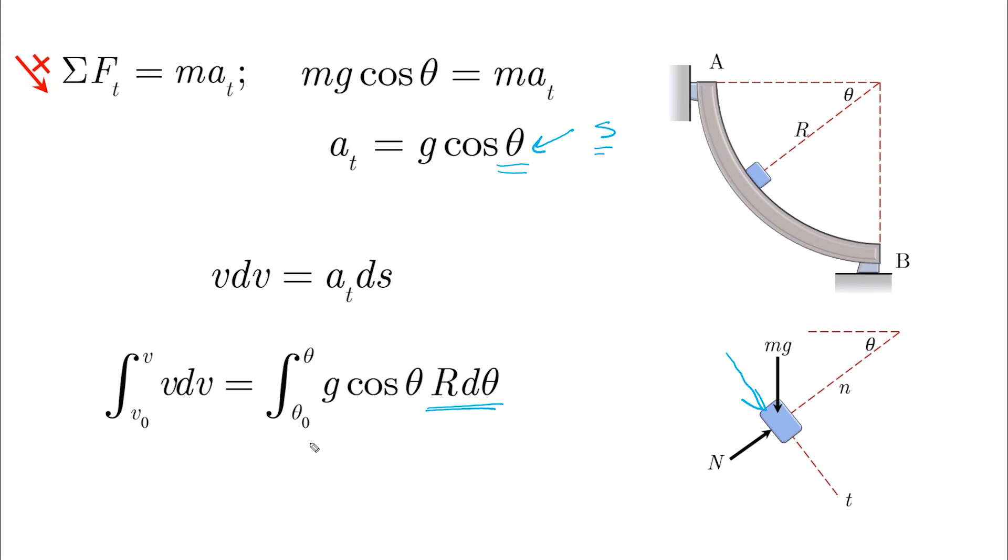So as long as the initial conditions are given, it's either that the question tells you find the velocity at such theta, so theta is given and you need to find the velocity, or vice versa. When the velocity is equal to something, the velocity is given.